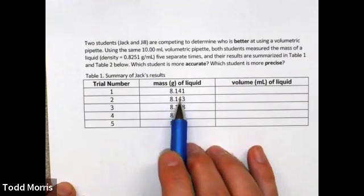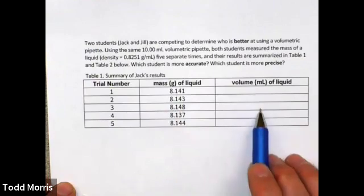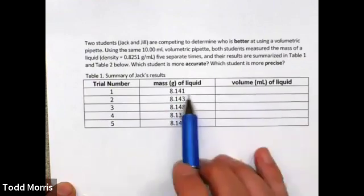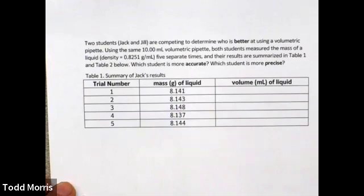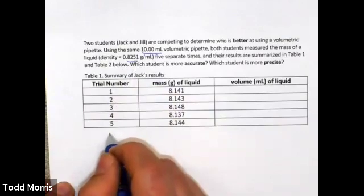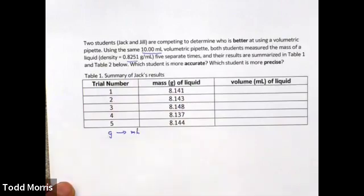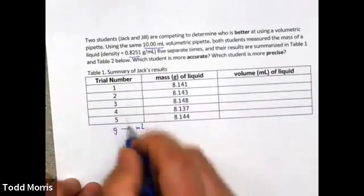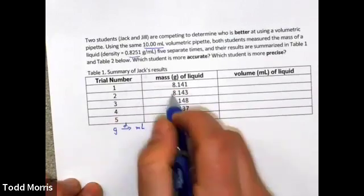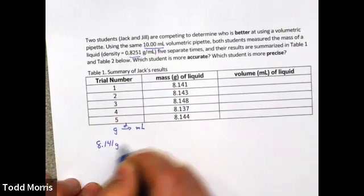The students actually measured the masses of what they thought was 10 milliliters using the 10 milliliter volumetric pipette. To determine who's more accurate and more precise, we need to first convert the actual individual masses of liquid into a volume they actually delivered. We can do that with the density information that we're given. So, density as a conversion factor, we convert from grams of liquid into volume of liquid. So, for trial one, for example, 8.141 grams of liquid.